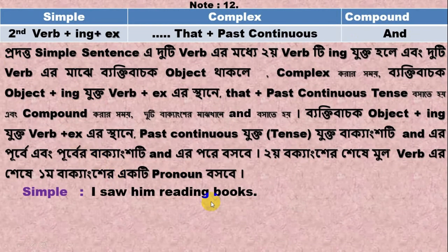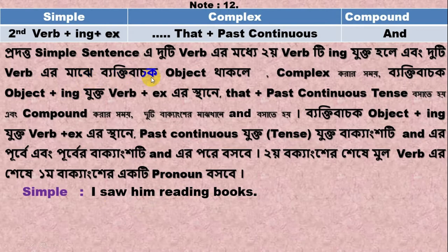Example sentence: 'I saw him reading books.' The simple sentence has a duty-verb. 'Reading' is the duty-verb here. So 'reading' is the duty-verb, and 'him' is the object.